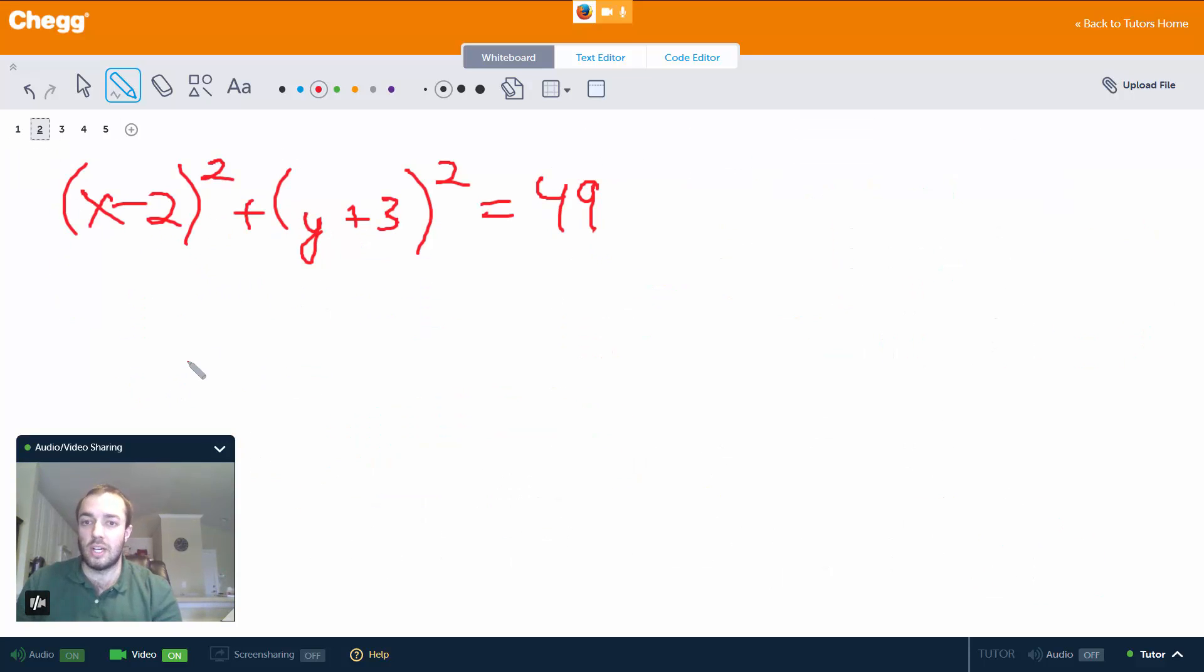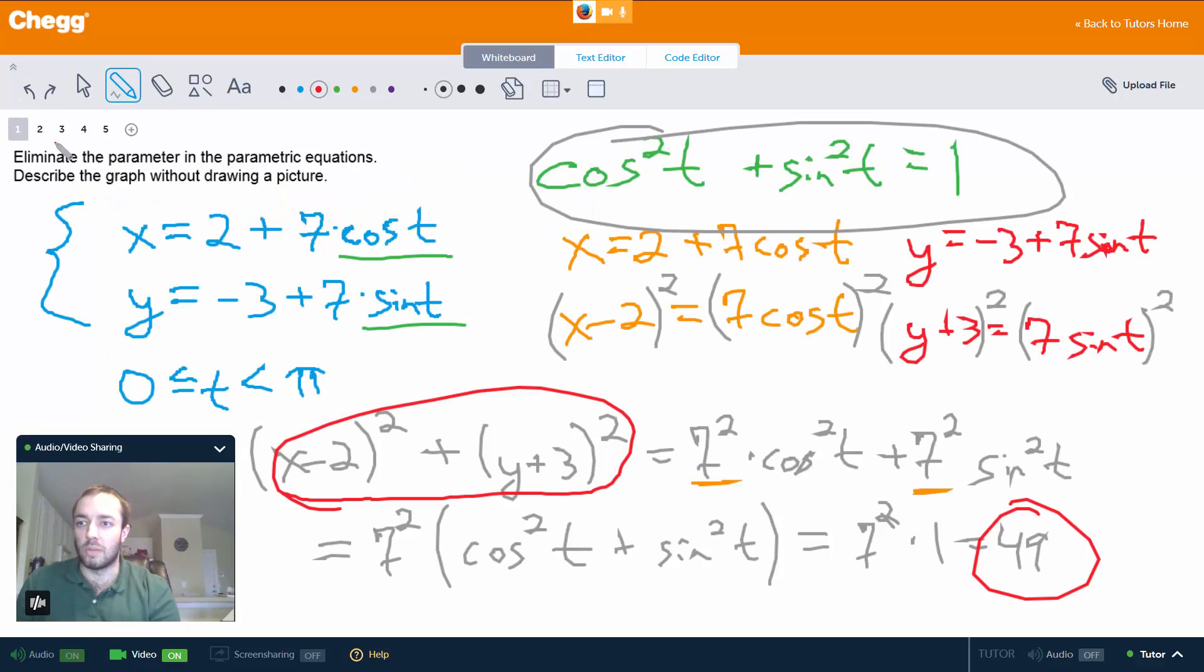So we might be tempted to say, oh hey that's a circle centered at (2, -3) with radius 7. And we want to be very careful because if we were just given this with nothing else, then yeah that would be true. But we weren't just given this. We were starting somewhere else. We started with this whole thing right here. So we have to be very careful. And specifically we have to be careful about this.